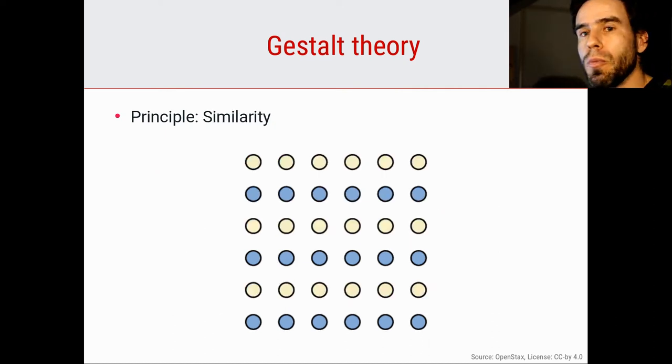Then we have a related principle, the principle of similarity. If things are similar, we tend to group them together. Again, here we have a grid. You could say it's 6 by 6 dots, but most people would not. The dominant perception is that we have six objects, six lines. We tend to group the dots with the same color together because they are similar. We can see that this line is made up of individual dots, but we tend to group these six dots together into a perceived line because they have the same color. That's the principle of similarity.